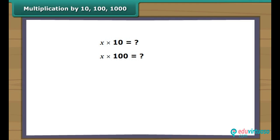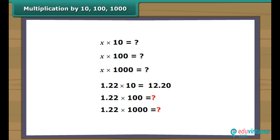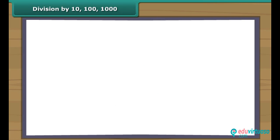Multiplication by 10, 100, 1000. What happens when a decimal number is multiplied by 10, 100, or 1000? When we multiply 1.22 by 10, we get 12.20. When 1.22 is multiplied by 100 and 1000, we get 122 and 1220 respectively. We observe that when a decimal number is multiplied by 10, the decimal point shifts to the right by one place; however, the digits remain the same. Similarly, if a decimal number is multiplied by 100 and 1000, the decimal point shifts to the right by 2 and 3 places respectively.